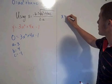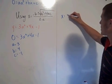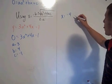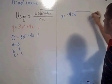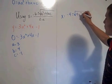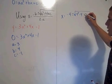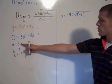So you have x equal to negative b, which in this case is negative 4, plus or minus the square root of 4 squared minus 4 times a, and a is 3.